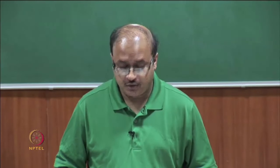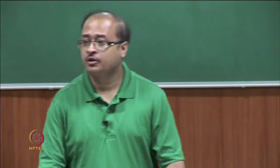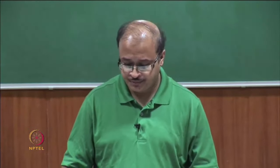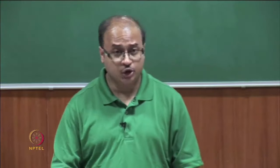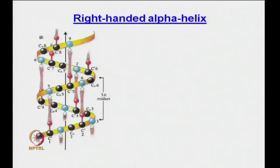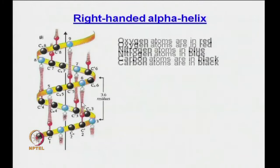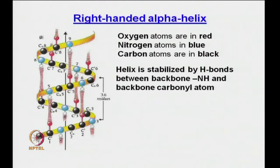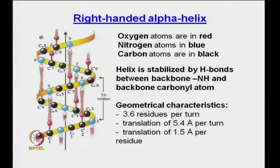Welcome to today's class. We will carry on with our discussion on secondary structure. Last time we were mainly talking about alpha helices, so just a brief recap of what we looked at last class. This was the right-handed alpha helix — we were talking about the hydrogen bonds, symmetry operations. The oxygen atoms are in red, hydrogen atoms in blue, carbon atoms in black, and the helix is stabilized by intra-helical hydrogen bonds, with certain geometrical characteristics.